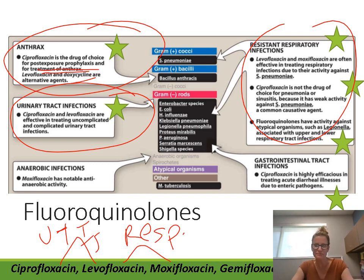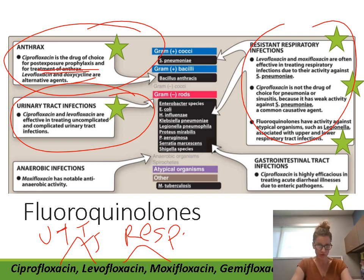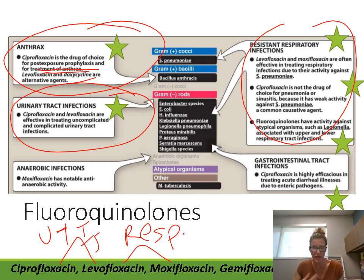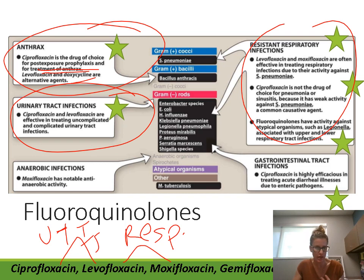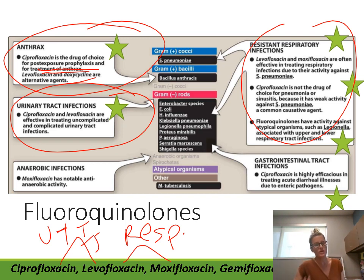For gastrointestinal tract infections — in severe acute diarrhea such as traveler's diarrhea, empiric antibiotic use can be indicated. Ciprofloxacin is really effective against acute bacterial diarrhea. Another option is azithromycin. Not all diarrhea requires antibiotics, but traveler's diarrhea is one scenario where antibiotic therapy does benefit the patient. Ciprofloxacin and azithromycin are good first-line agents for traveler's diarrhea.